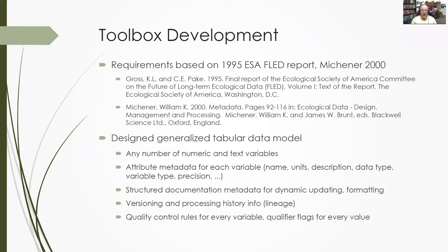We started by designing a generalized tabular data model that would hold any number of numeric and text variables, all the relevant attribute metadata — name, units, descriptions, data types, semantic type, precision — and also stored structured documentation metadata along with the data, including versioning, processing history, and information for processing lineage. A very important part that was prescient to add at this point was a quality control framework, including rules for every variable and storage for qualifier flags for every value. That was a very critical component of this model.